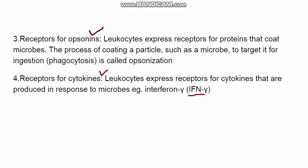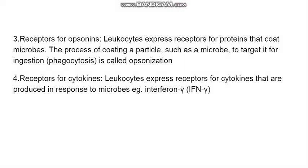Lastly, there are receptors for opsonin. Opsonin is a substance that coats the microbe or any particle, making the microbe more appealing for the WBCs. The WBCs recognize this opsonin and then attack the microbe. This whole process is known as opsonization. Various antibodies and complement system factors act as opsonins.